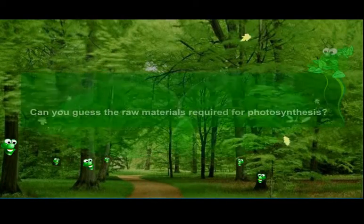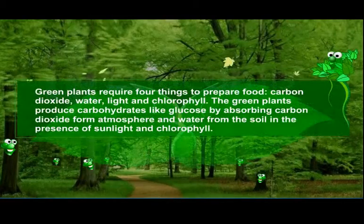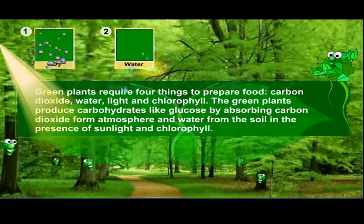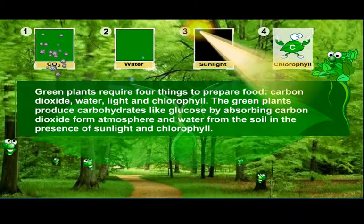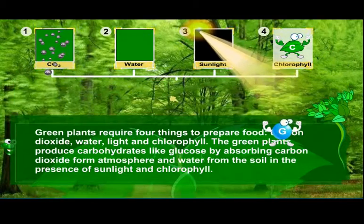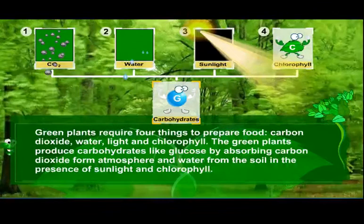Can you guess the raw materials required for photosynthesis? Green plants require four things to prepare food: carbon dioxide, water, light, and chlorophyll. The green plants produce carbohydrates like glucose by absorbing carbon dioxide from the atmosphere and water from the soil, in the presence of sunlight and chlorophyll.